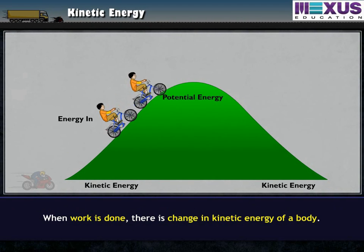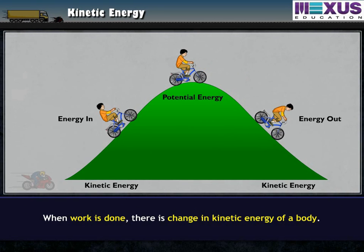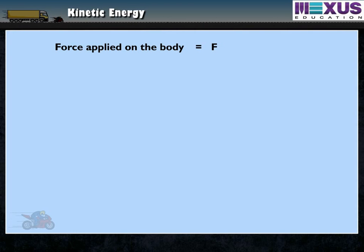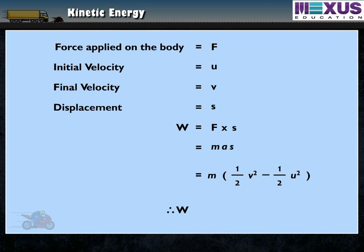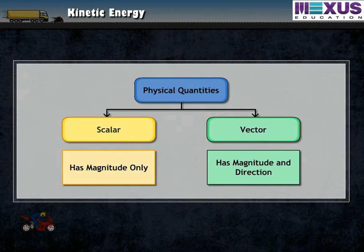When work is done, there is a change in kinetic energy of a body. Let force F act on a body with initial velocity U. The body acquires a velocity V and gets displaced by S. Then, work done equals force multiplied by distance, which is equal to M×A×S, or M×(½V² − ½U²), which equals ½MV² minus ½MU². Kinetic energy is a scalar quantity.